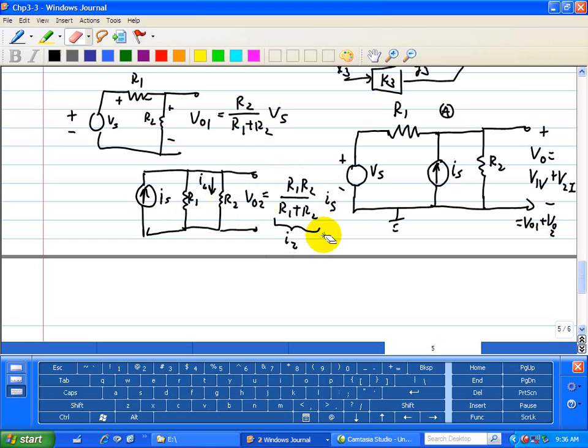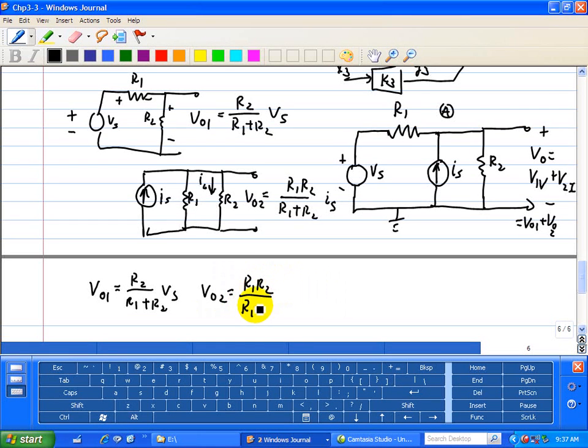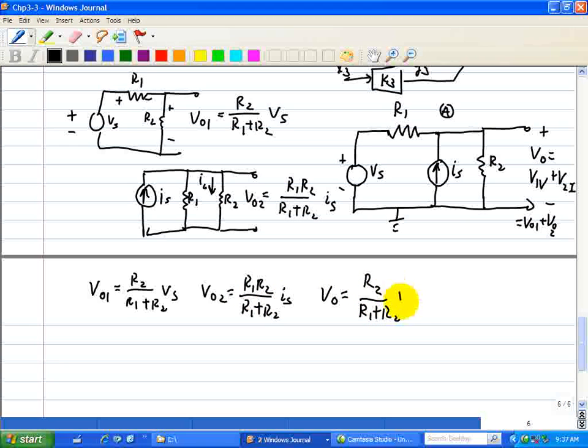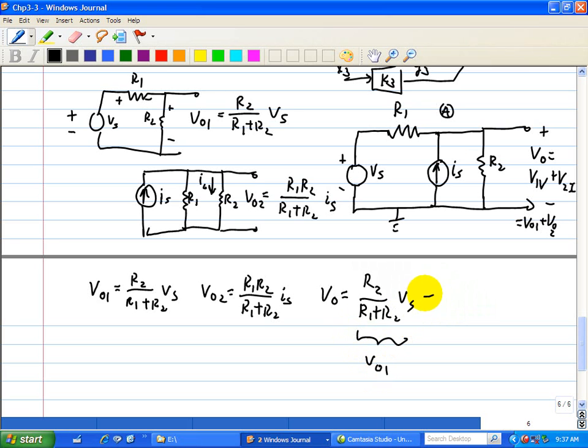So now that we completed that, we can add the outputs VO1 and VO2 as follows. VO1 is equal to R2 over R1 plus R2 VS, and VO2 is equal to R1 R2 over R1 plus R2 IS. Adding those outputs, we have R2 over R1 plus R2 VS, this is due to VO1, plus R1 R2 over R1 plus R2 IS, and that's due to VO2.